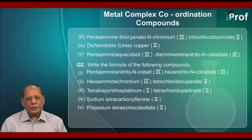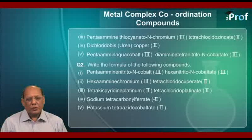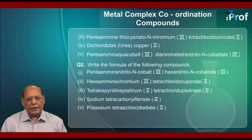The second name is: hexaammine chromium(III), tetrachlorido cuprate(II). The third is: tetrakis(pyridine) platinum(II), tetrachlorido platinate(II). The fourth is: sodium tetracarbonyl ferrate(-II). The fifth is: potassium tetraazido cobaltate(II).